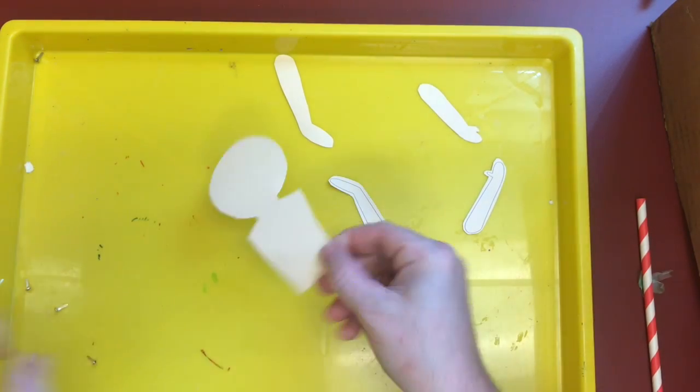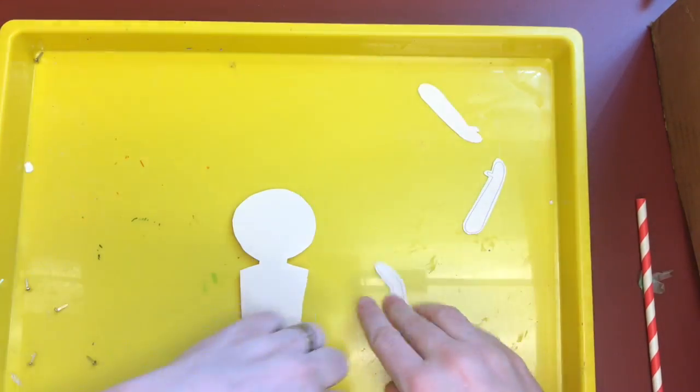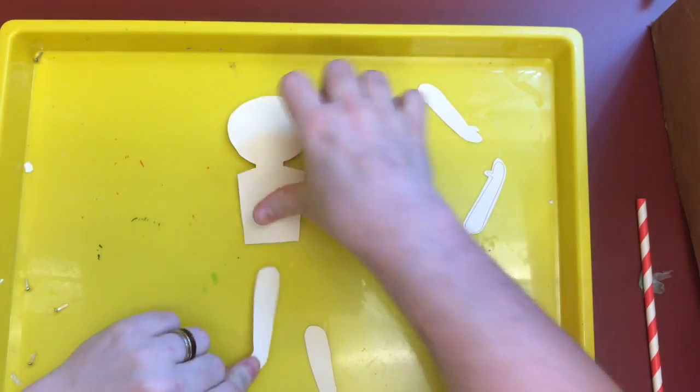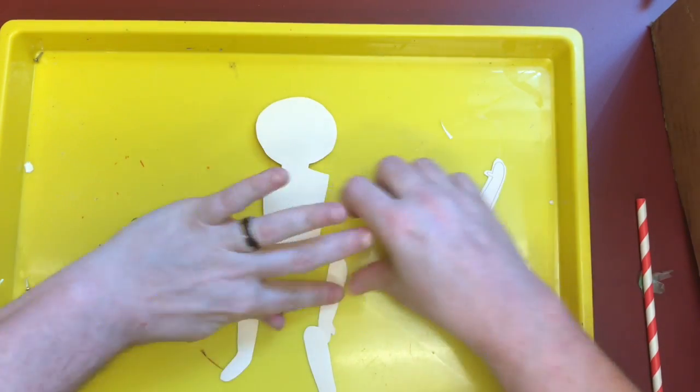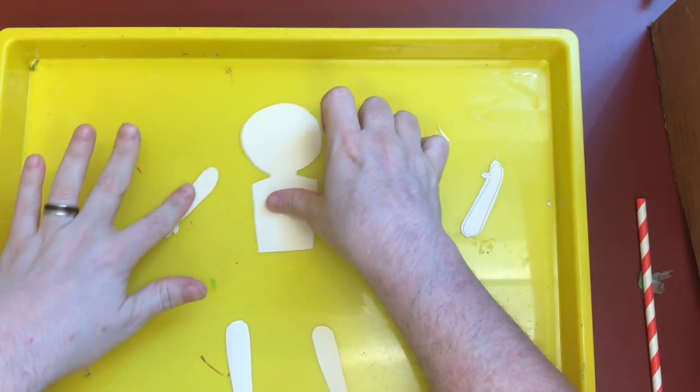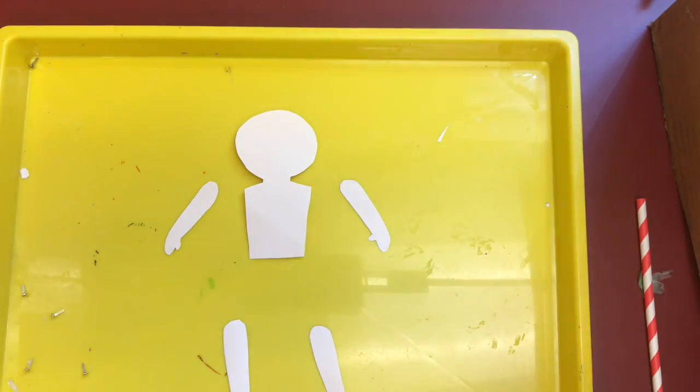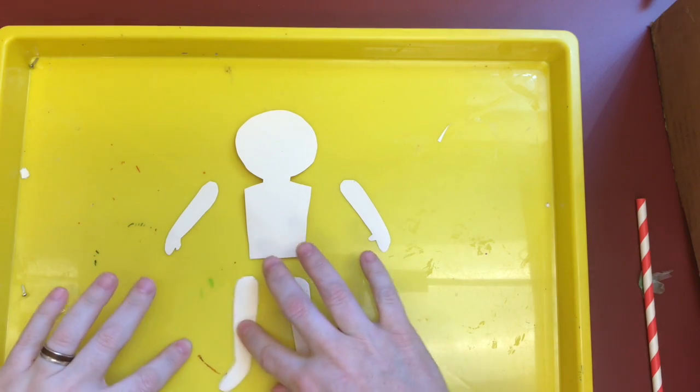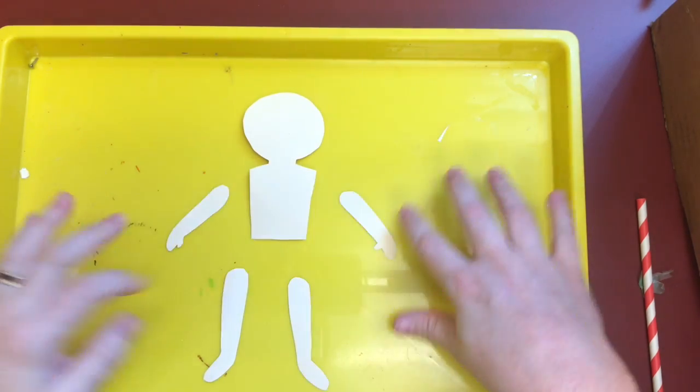Now that we have our cut out pieces, you can see how they're all going to go together. I like to flip mine over so that you can't see the lines on the front of my puppet. I think that looks nicer.